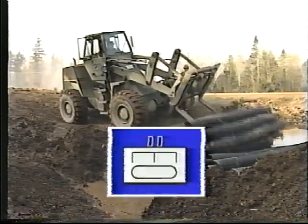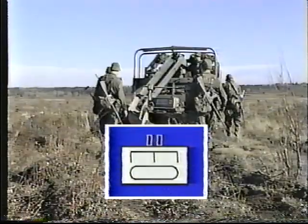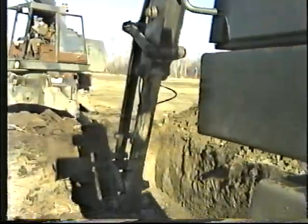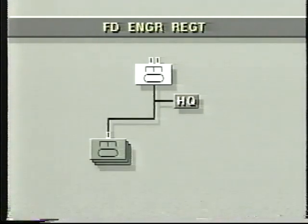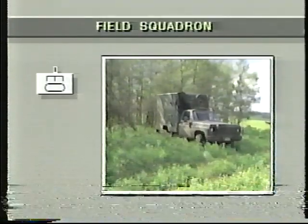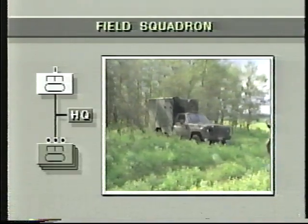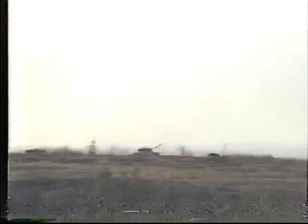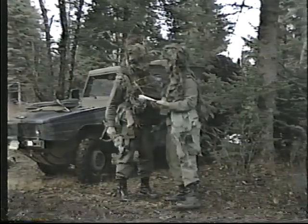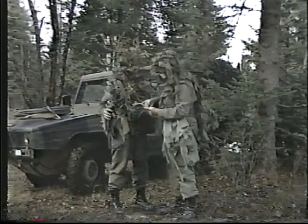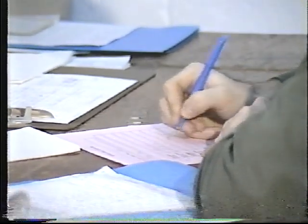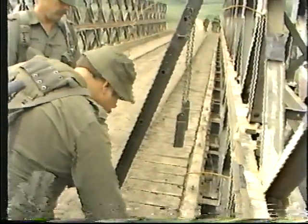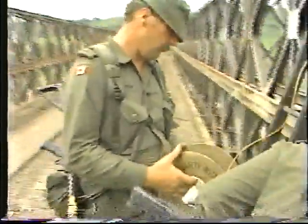The field engineer regiments provide combat engineer support to the brigades and to division troops. They are manpower oriented and depend on the engineer support regiment for heavy equipment assistance. Each regiment is made up of a headquarters, three field squadrons, and an administration squadron. The field squadrons have a small headquarters and three field troops, each with four field sections and a multi-purpose engineer vehicle section. A troop is normally affiliated with a battle group, and the troop commander acts as the engineer advisor to the battle group commander. The troop warrant officer runs the troop command post, monitors the activities of the field sections, and looks after the troop administration.